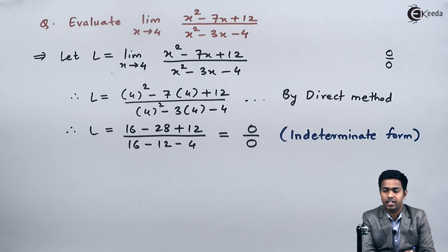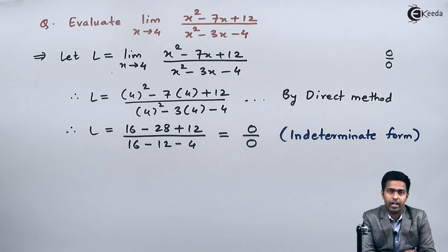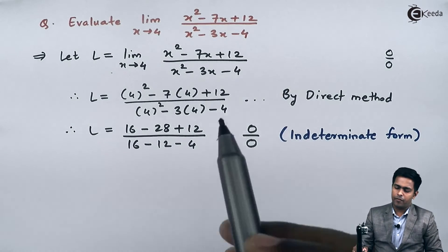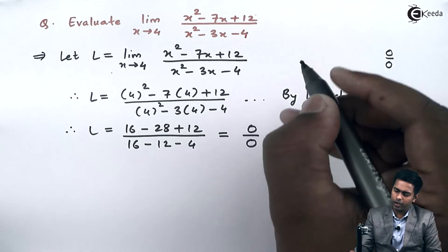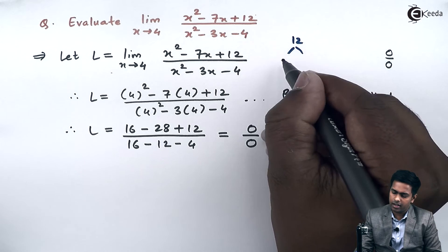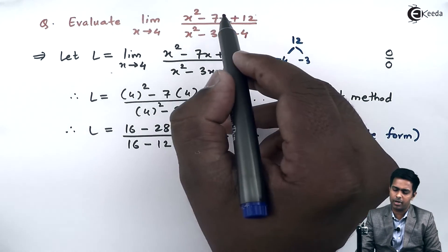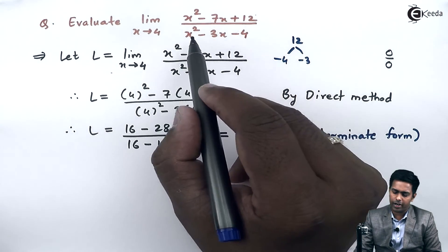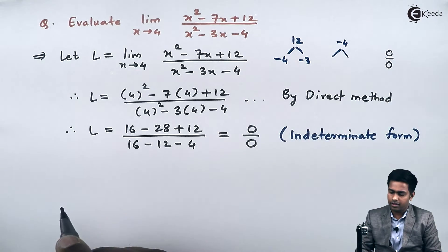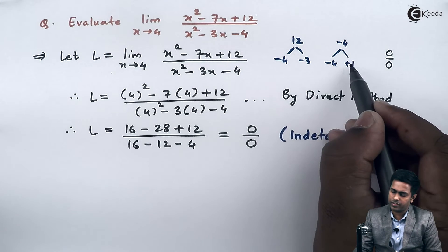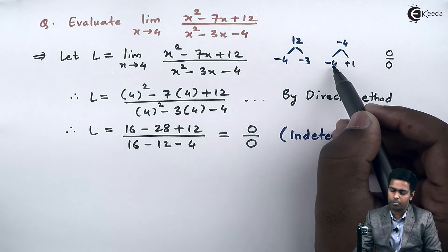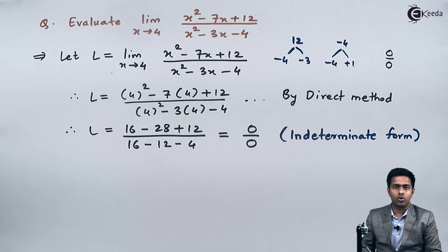Since the numerator and denominator are both quadratic equations, we can find their factors and apply the method of factorization. For the numerator, the factors of 12 are -4 and -3, since their product is -12 and their sum is -7. For the denominator, the factors of -4 are -4 and +1, since their product is -4 and their sum is -3.